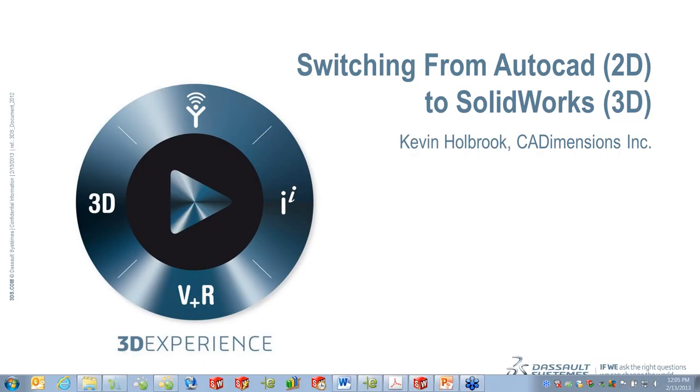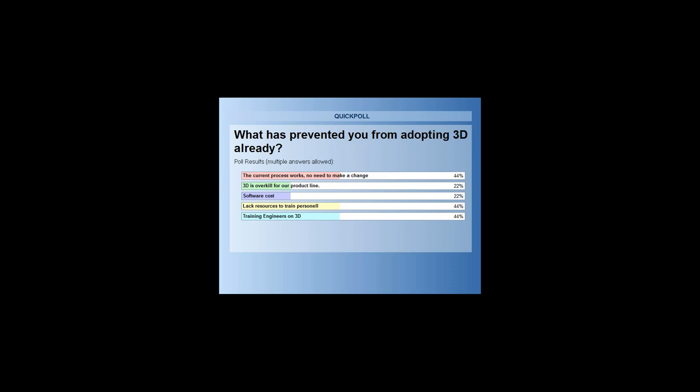We've hit on a bunch of the reasons. A lot of people say their process works — they can draw in 2D, manufacture parts, and get things out the door. Some people think 3D is overkill for their product line. On software costs, you have to look at the cost of not using 3D versus the benefits of putting 3D into your process. Lack of resources is partially where CAD Dimensions comes in, along with training your engineers.